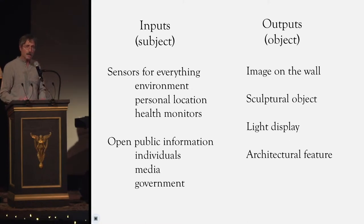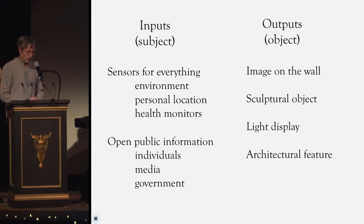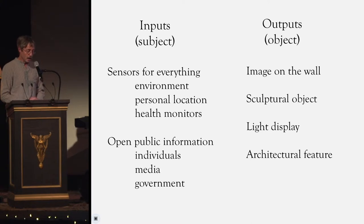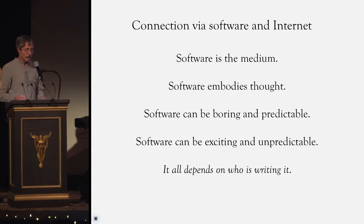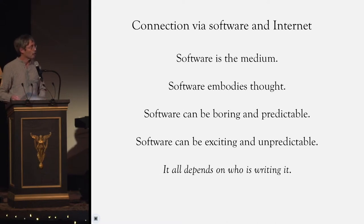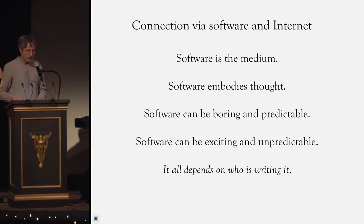So what kind of data are we talking about? Input data from personal or environmental sensors — the so-called Internet of Things — is expanding extremely rapidly. There's certainly no lack of material. The output could be an image, a sculpture, even an architectural feature like window tinting.